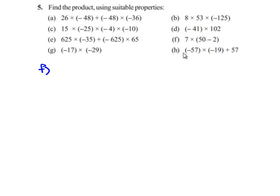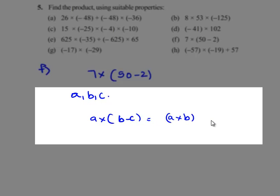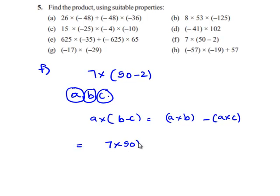We'll see the next problem: 7 times of (50 minus 2). From the distributive law of multiplication over subtraction, for any integers a, b, and c: a times (b minus c) gives a times b minus a times c. Here, 7 corresponds to a, 50 corresponds to b, and 2 corresponds to c. Therefore, this can be written as 7 into 50 minus 7 into 2. 7 into 50 gives 350 and 7 into 2 gives 14. Therefore, 350 minus 14 gives 336. Therefore, the answer is plus 336.